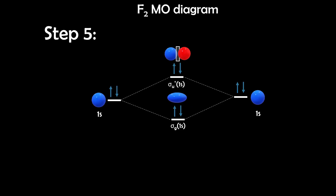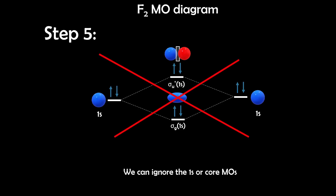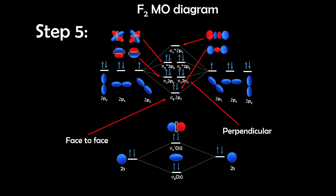Step 5: Build the diagram. We start with the core 1s orbitals — σg1s (bonding) and σu*1s (antibonding). Since these are core electrons far from the valence shell, we'll usually ignore them. For the valence orbitals, the 2s orbitals overlap to form σg2s and σu*2s. The 2p orbitals form σg2p and σu*2p from head-on overlap of the px orbitals, and also πu2p and πg*2p from side-by-side perpendicular orbital overlap.